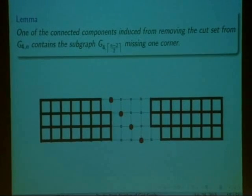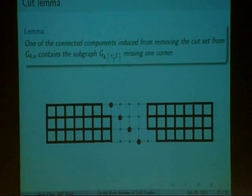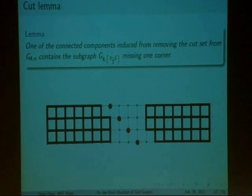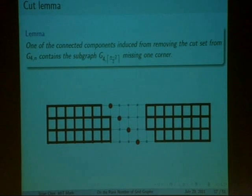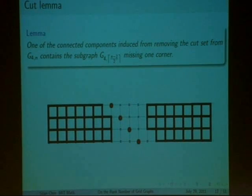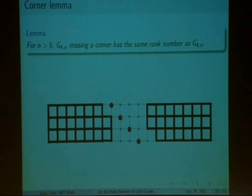First, we have what's called the cut lemma. The cut lemma states that given any configuration of cut set vertices, once you remove them, you're left with two halves, one of which will have to have a grid graph with the following dimensions, except it'll be missing a corner. On that note, we also have the corner lemma. The corner lemma states that for a sufficiently long grid, removing the corner will actually not affect the rank number. It'll stay the same.